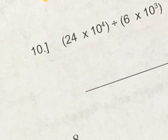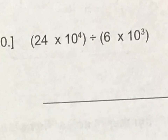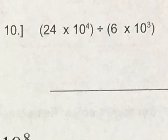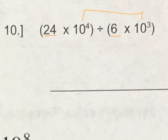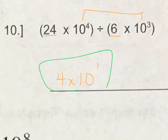Number 10 is a division problem. We could use the quotient of powers exponent property, where we do regular math with our coefficients and then keep the base and subtract the exponents. So 24 divided by 6 is 4. Then we keep the base and subtract the exponents. And this is ready to go — that's in scientific notation.